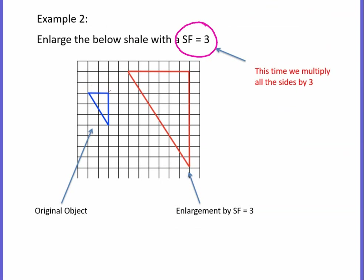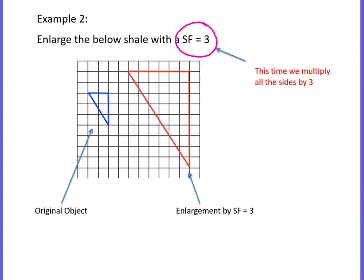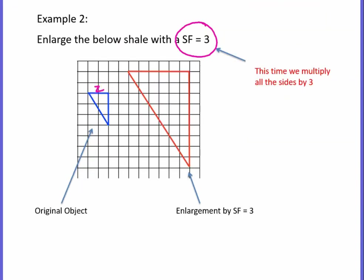Here's another example with a scale factor of three. You'll notice this was two and this is six, this is three and this is now nine squares. And here's one — we're going to enlarge this one by scale factor two. That's dead easy with horizontal and vertical sides: two becomes four, and six becomes twelve. Scale factor three: three becomes nine.